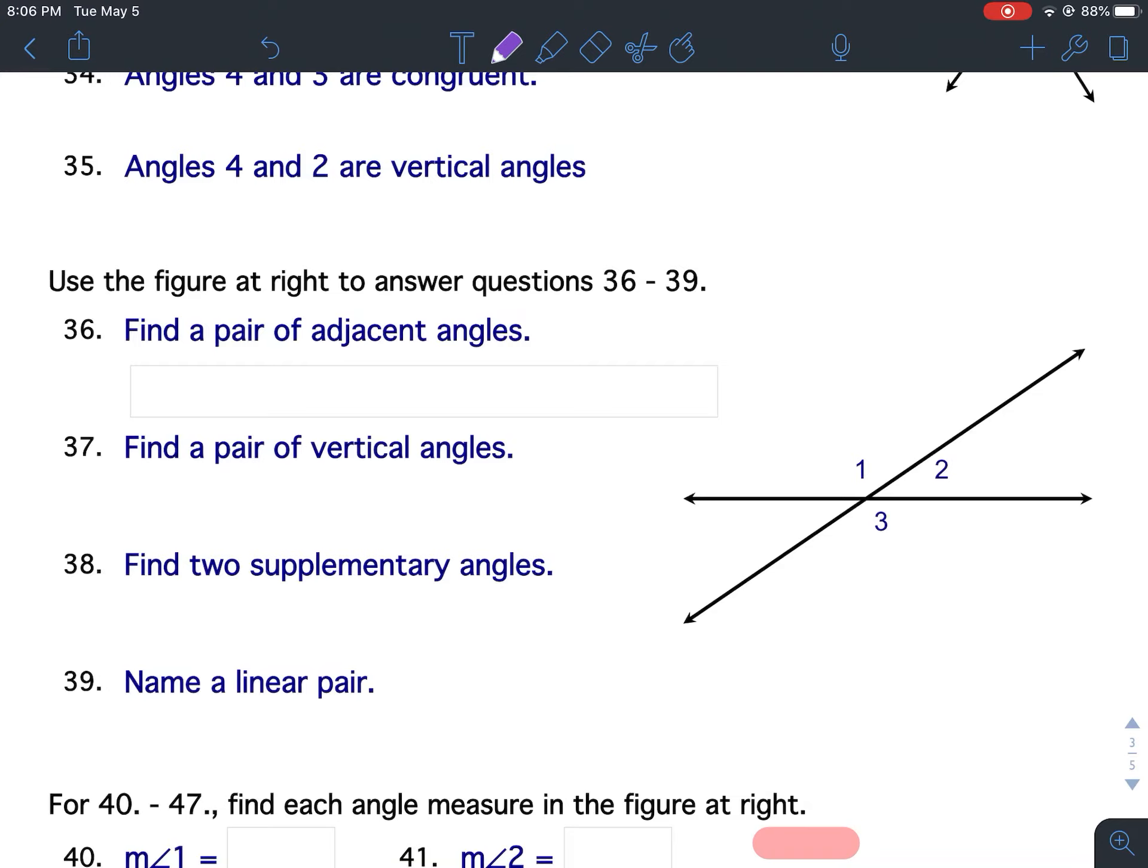For number 36, it says find a pair of adjacent angles. Adjacent angles are angles that are side by side. These two angles are side by side, that would make them adjacent angles. These two angles are side by side, that would make them adjacent angles. However, are 1 and 3 side by side? No, so they are not adjacent angles. So for question 36, a pair of adjacent angles, you could either write down angle 1 and angle 2, or you could write down angle 2 and angle 3.